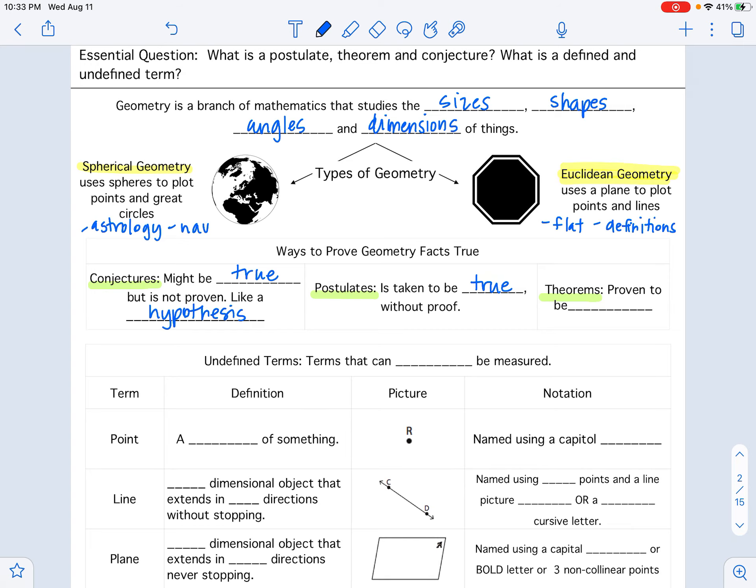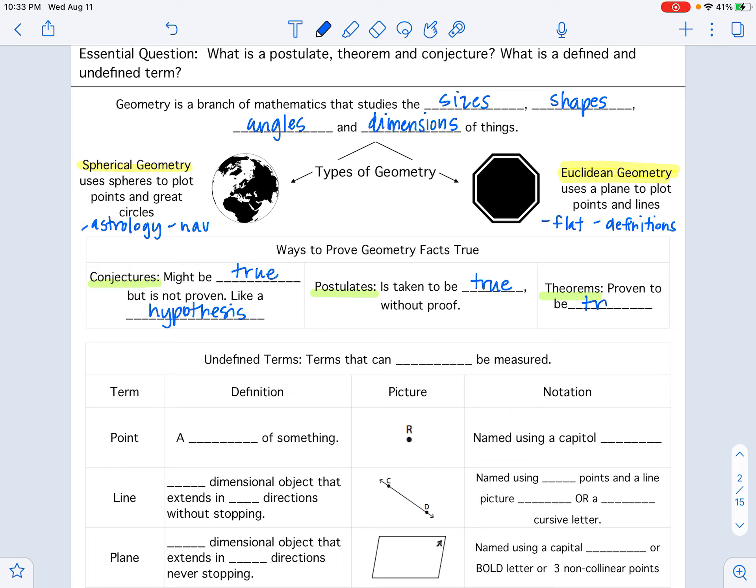Theorems are proven to be true already. So they've already been proven. We already know they're true. So somebody started off with a conjecture and proved it. So we already know that it works.